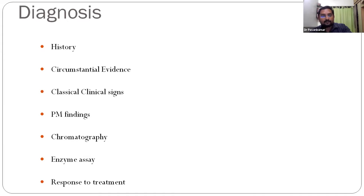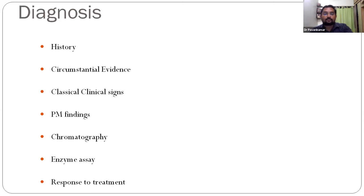History and circumstantial evidence play a crucial role in diagnosing any form of toxicity, particularly organophosphorus toxicity. Apart from history and circumstantial evidence, there are classical clinical signs - the muscarinic and nicotinic signs described above. The consistent post-mortem finding of congestion and petechial hemorrhage in the urinary bladder supports diagnosis. Through advanced techniques, you can confirm the presence of organophosphorus toxicity using chromatographic techniques and enzyme assay to measure acetylcholinesterase enzyme activity. Response to specific treatment is also a diagnostic feature.